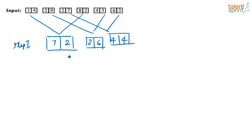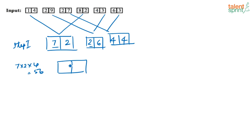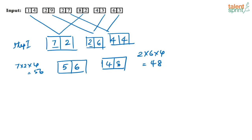For Step 2, we take the product of the first three numbers: 7 × 2 × 4 = 56. The next box is 2 × 6 × 4 = 48. So Step 2 gives 56 and 48.